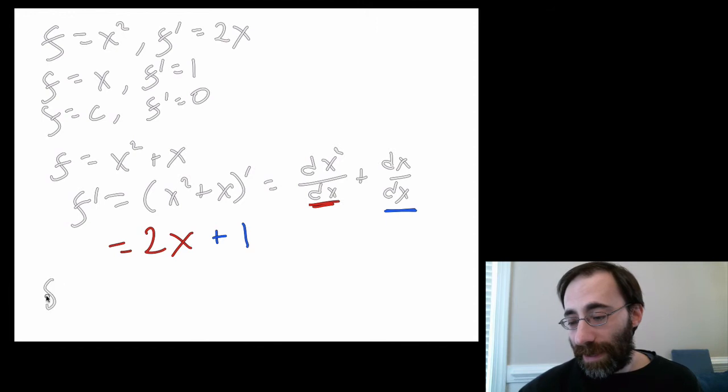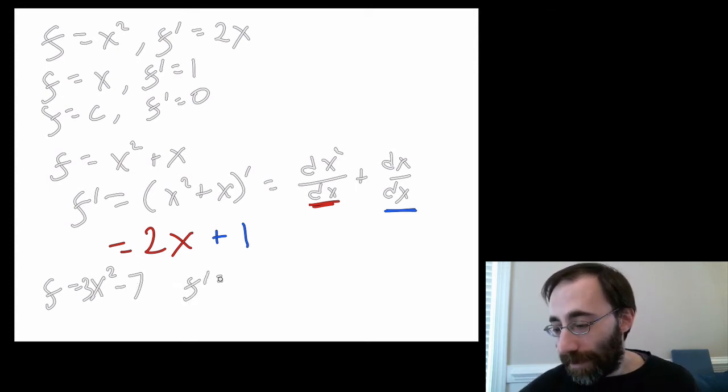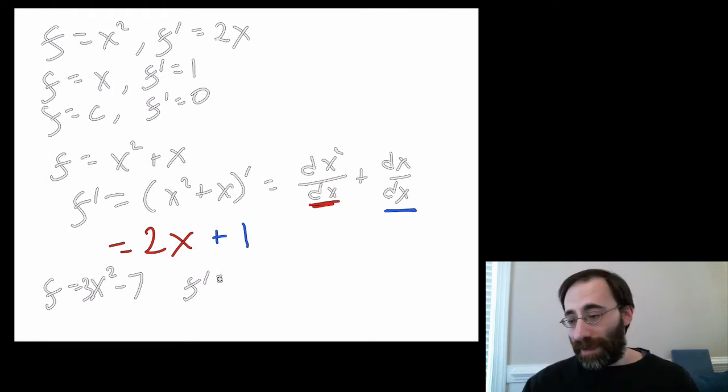What if instead f equals, let's say, x squared, let's say, 3x squared minus 7? Well, again, the derivative is going to be taken by taking the derivative of each part separately. Well, so first, the derivative of the first term...